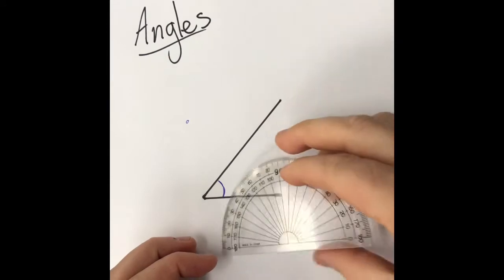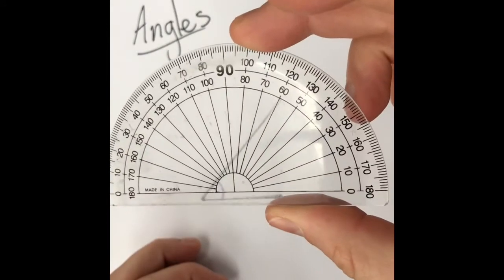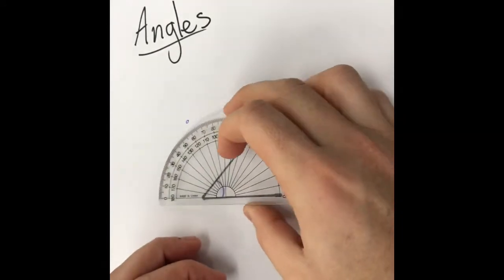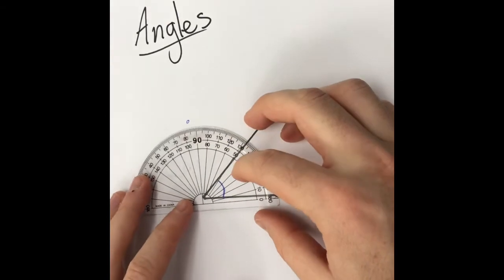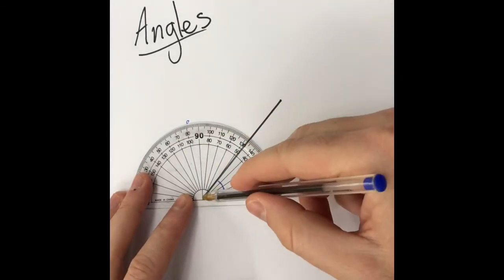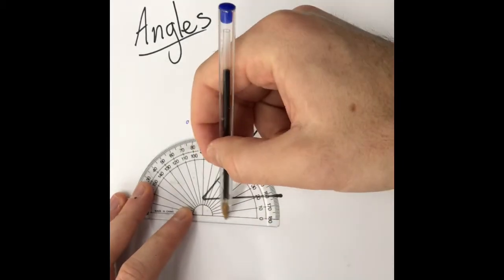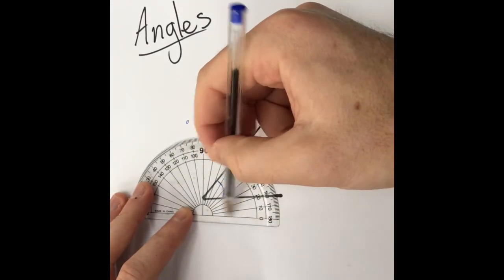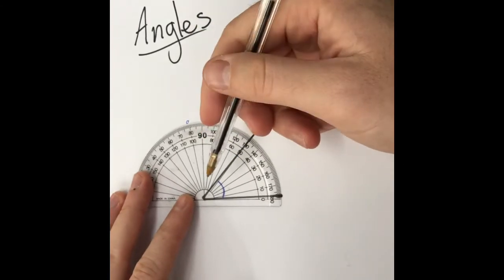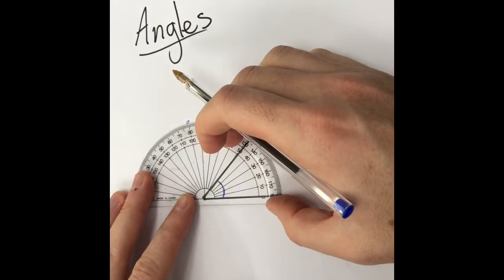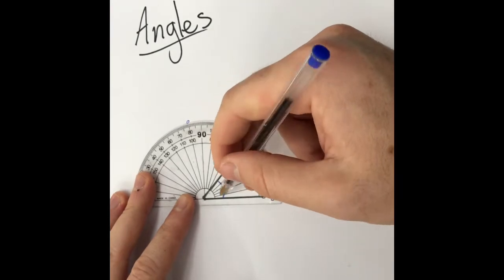You get the protractor, you pop it directly in the center, and then you make sure this bottom line goes directly along and lines up with the bottom line.